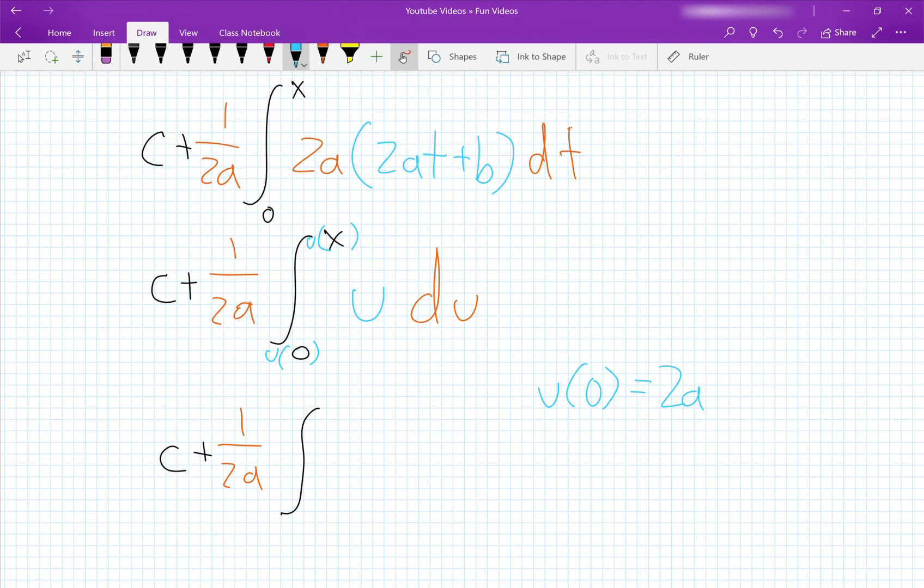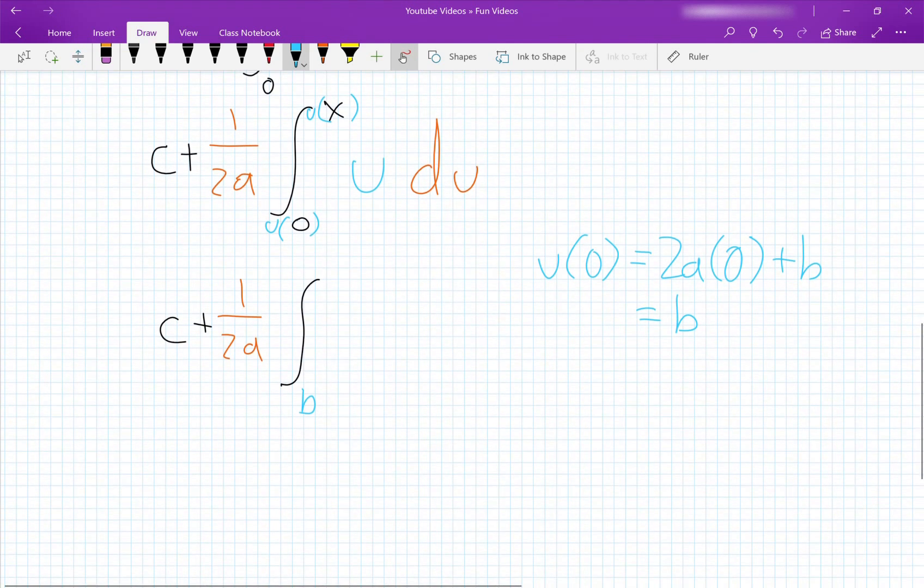we have 2a times 0 plus b, which is just equal to b. And then when t is equal to x,